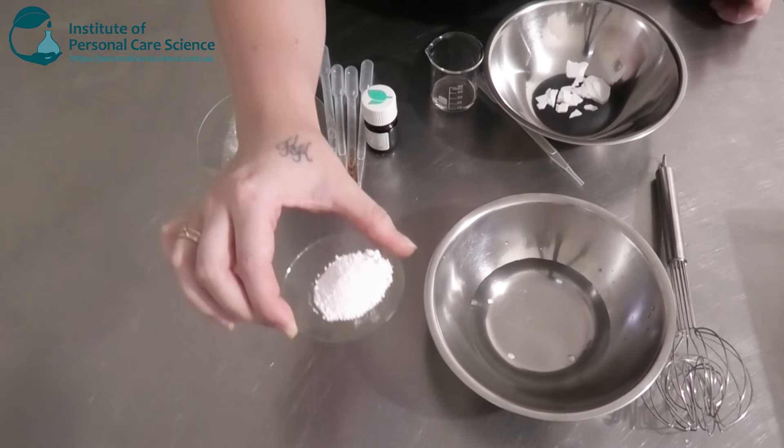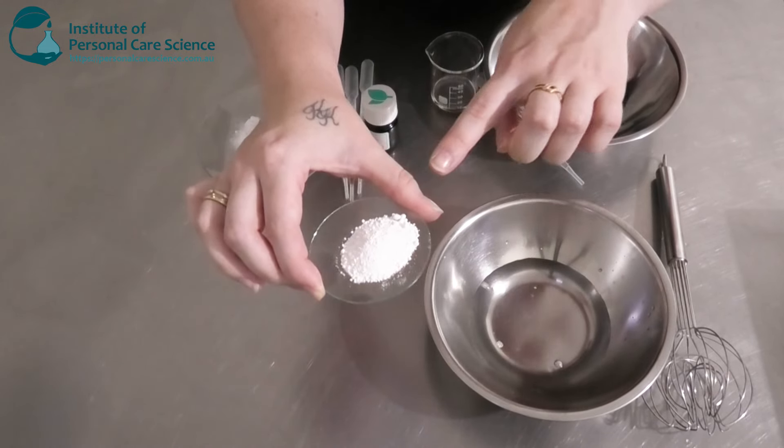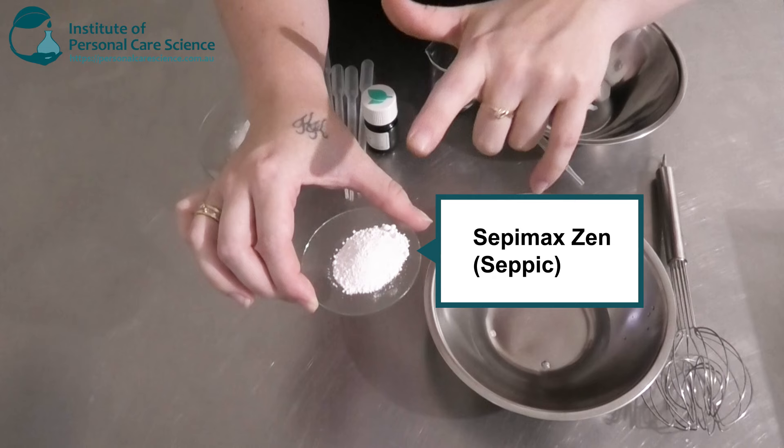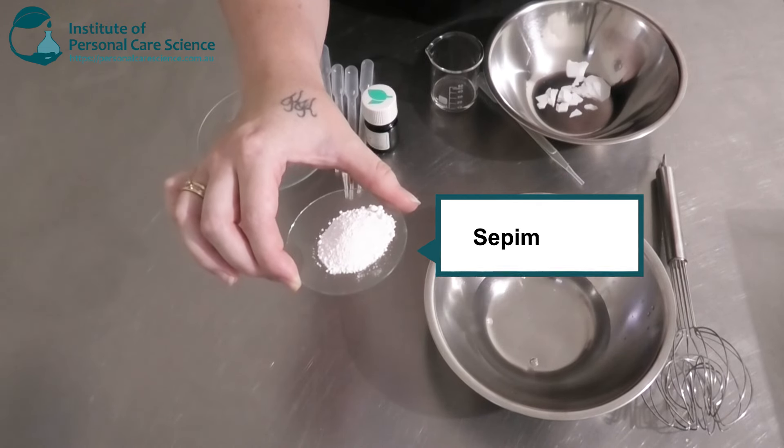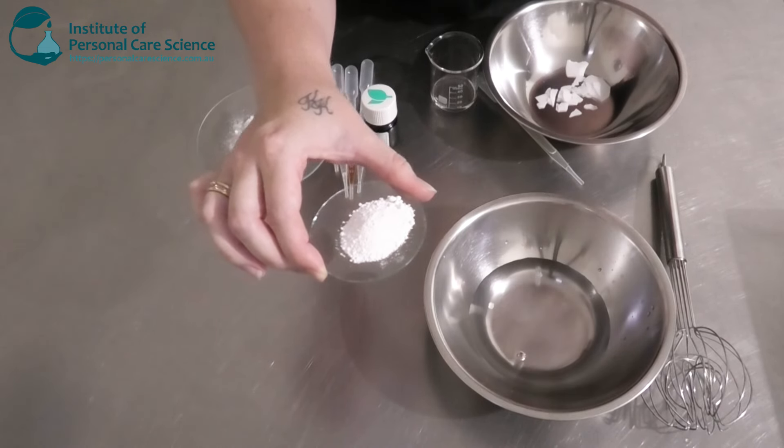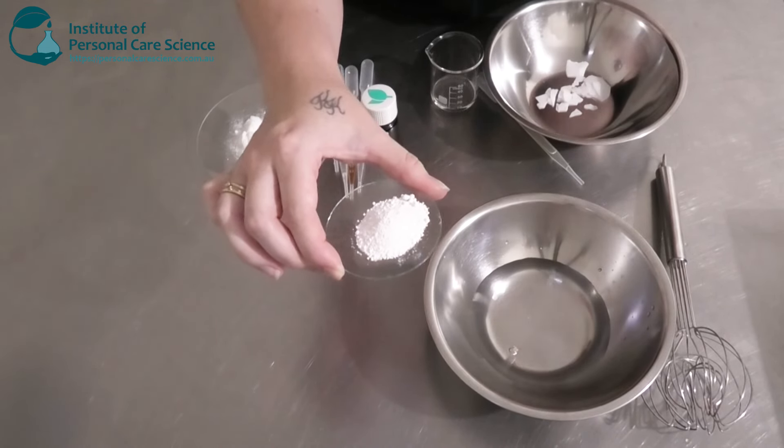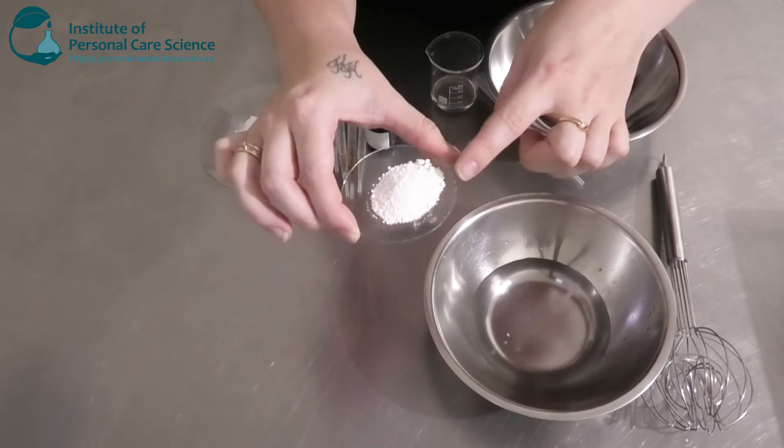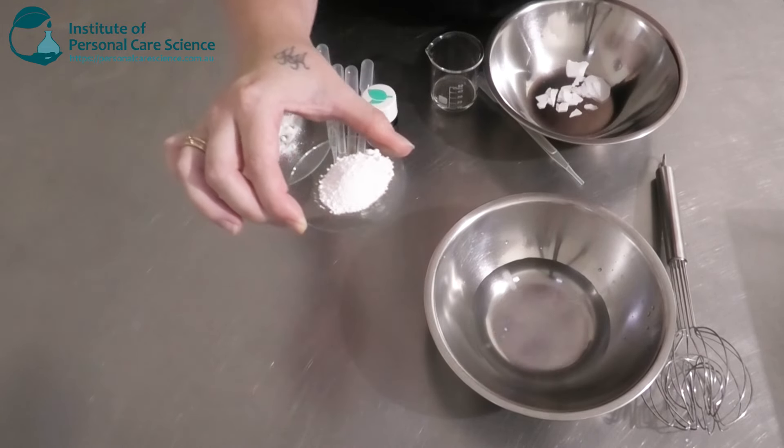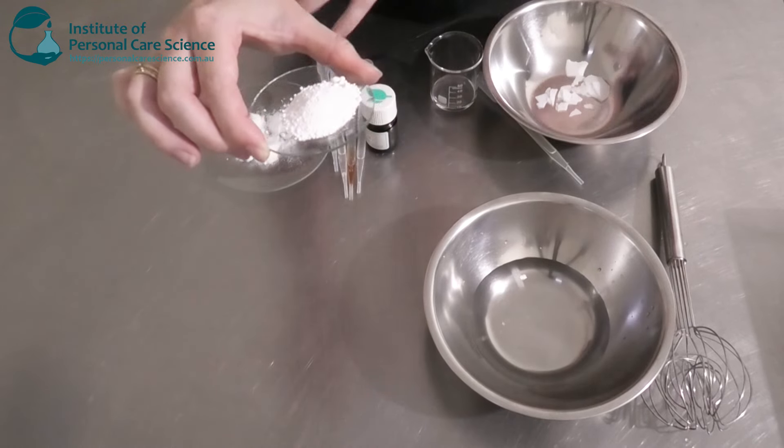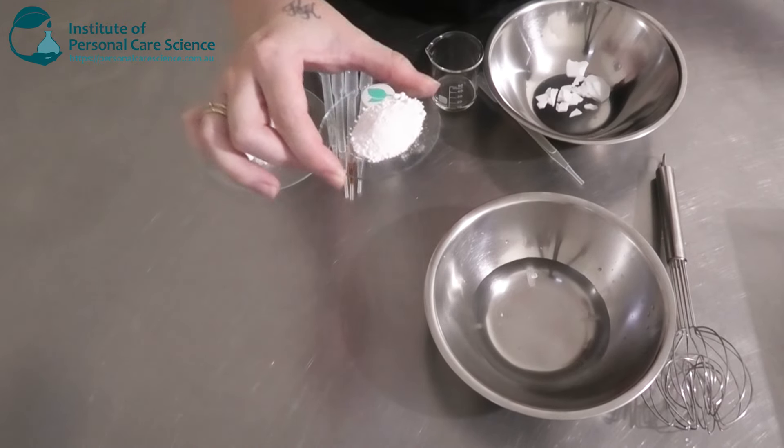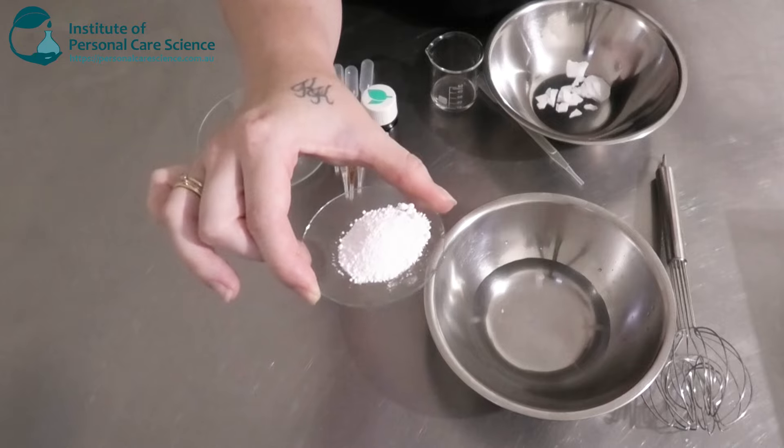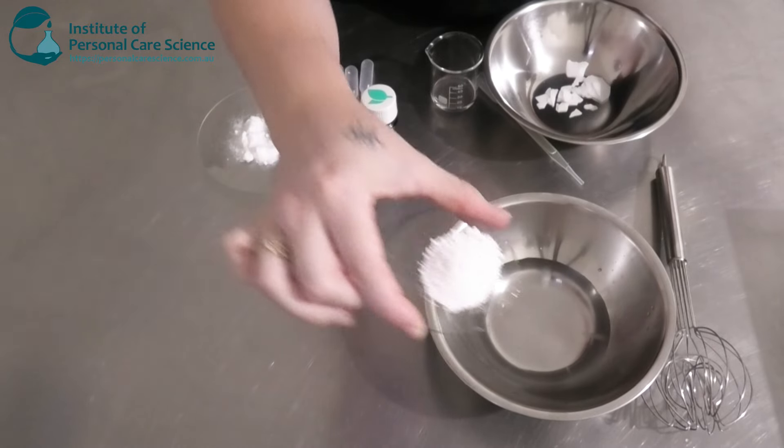Now you do want to use a really good stabilizing agent here. One of my favorites is the Sepimax Zen. This is really good at stabilizing in extreme conditions. With a lot of AHAs or BHAs, they do require a lower pH, so this is really good to use for that. We also have some particles to suspend and stabilize as well, so you need to use something that's really good at stabilizing in extreme conditions.